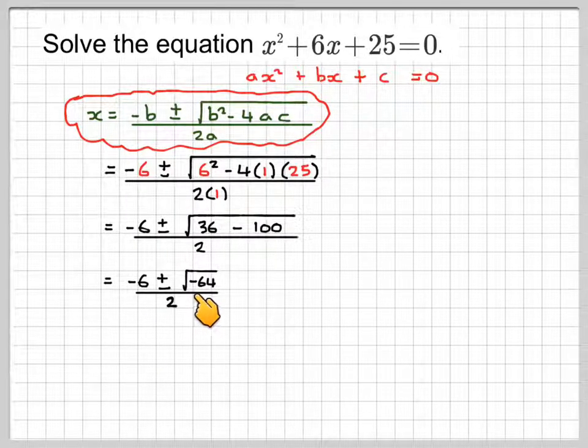We're going to have minus 6 plus or minus the square root of minus 64 divided by 2. We're starting to have a problem here because we can't really take the square root of minus 64. But what we can do is do this.